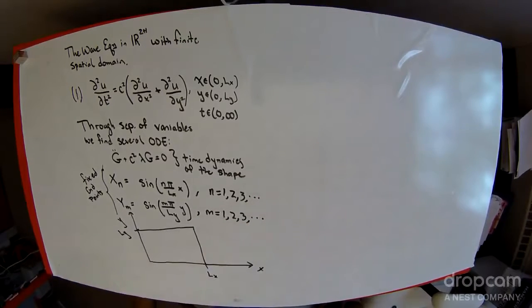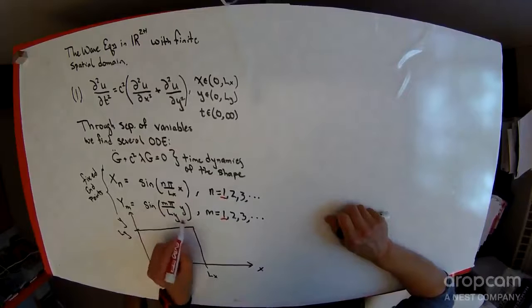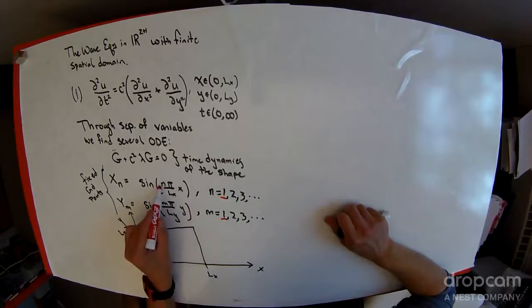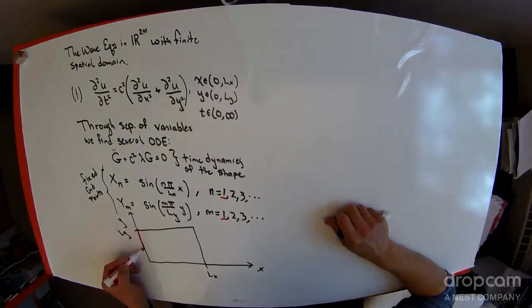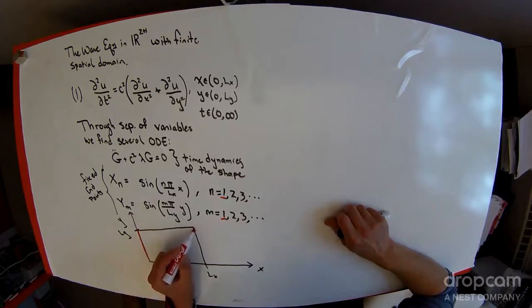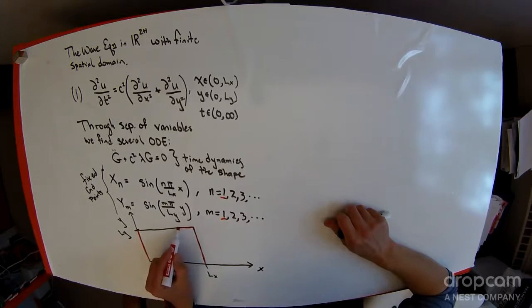and this is L_x and this is L_y. So for the n equal 1 case here, what you're talking about is the function is only 0 when x is 0, so over here, or when x is equal to L_x over here. Same thing for this y function.